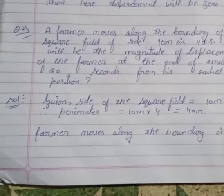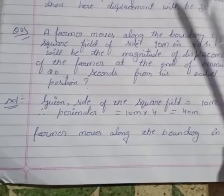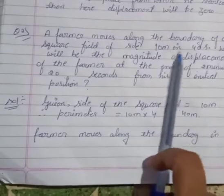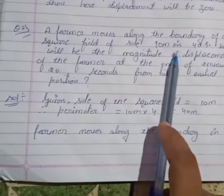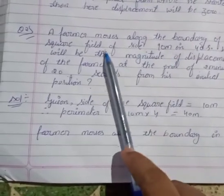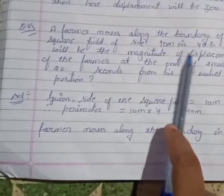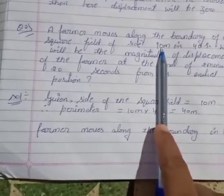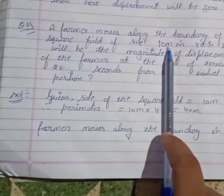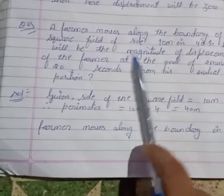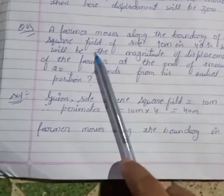Now the second question: a farmer moves along the boundary of a square field of side 10 meters. A square has 4 equal sides, so the perimeter is 4 times 10 meters, which equals 40 meters. The farmer completes one round in 40 seconds.